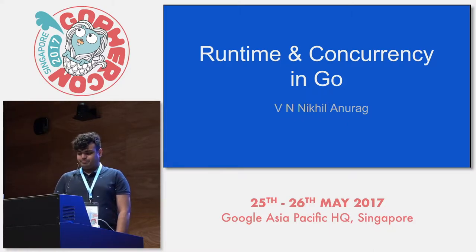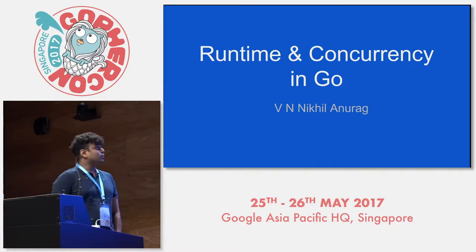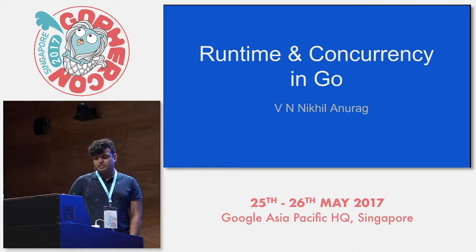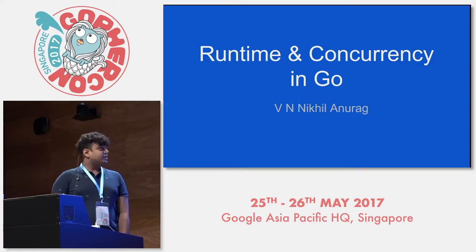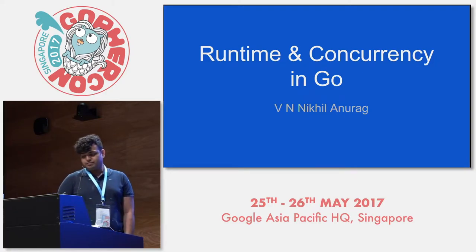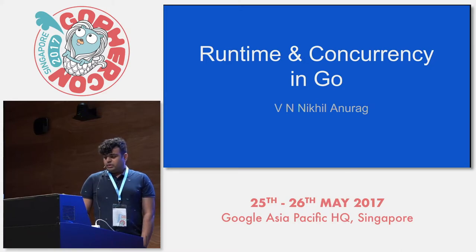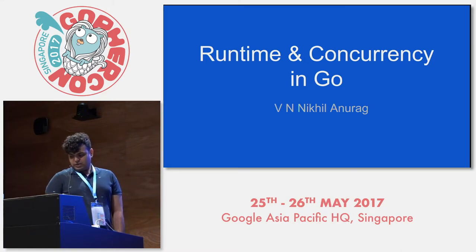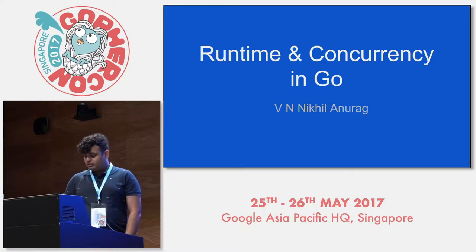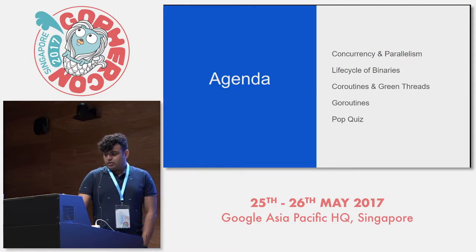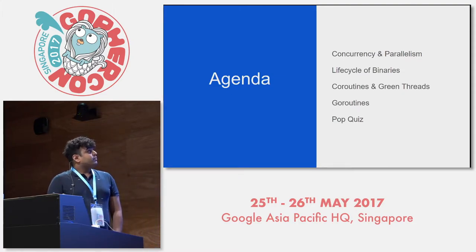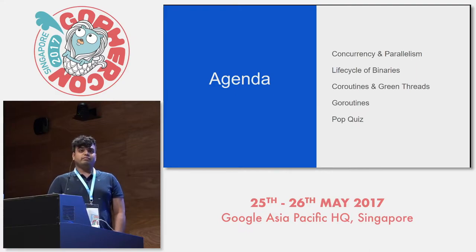One of the features that makes Go a modern and productive language is its native support for concurrency. It does this by way of coroutines and channels. Let's look at some of the concepts which will help us better understand goroutines. If we look at these topics one by one, we should have a pretty good understanding of how goroutines work.